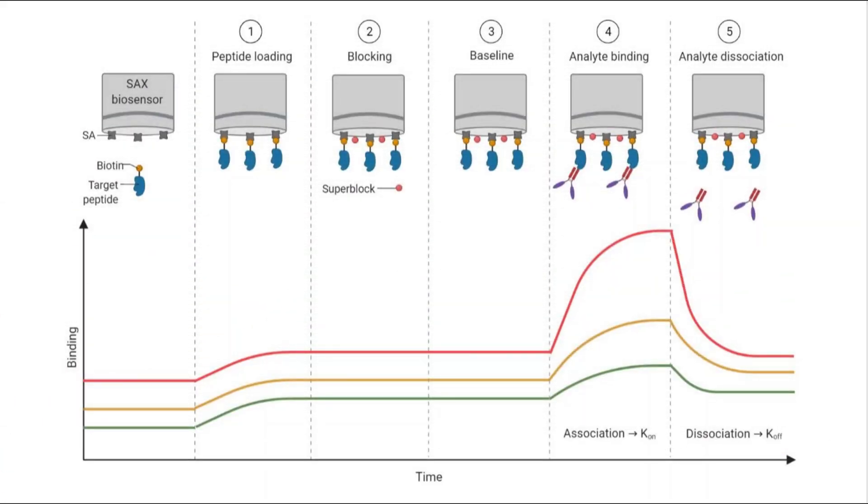BioLayer Interferometry is a label-free technology used to determine the rate of association and rate of dissociation between two molecules. This technique analyzes the interference pattern of white light reflected from two surfaces: a layer of immobilized protein on the biosensor tip and an internal reference layer.